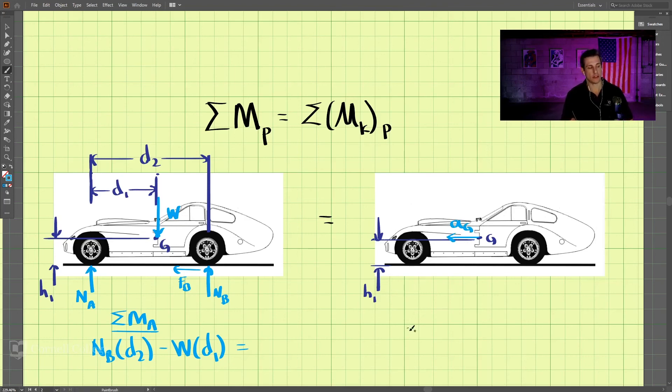And now we take the sum of the moments in the kinetic diagram around the same point A here, and what we have is the mass times AG, right? These two quantities multiplied together are a force, and then we multiply it by a distance, this perpendicular distance H1. Now, setting these two equal, if we're given these equations, we could either figure out the acceleration in this equation or figure out one of these other terms, depending on what the question gives us.